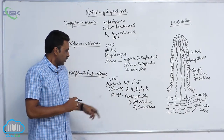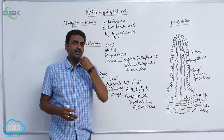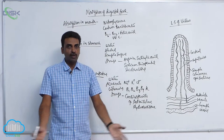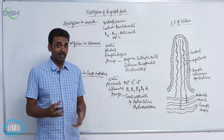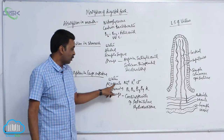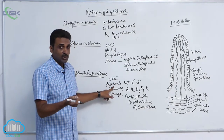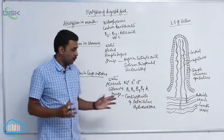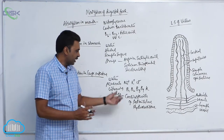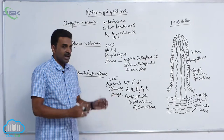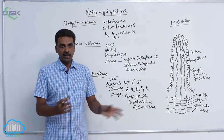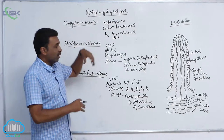Drugs are absorbed at all parts — mouth, stomach, small intestine, and large intestine — but different drugs are absorbed at different parts. In the large intestine, over one liter of water is absorbed. Gut flora synthesize vitamins B1, B2, B3, B9, and vitamin K, which are absorbed through the wall. Corticosteroids treat ulcerative colitis and are absorbed there as well.